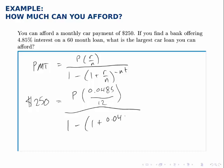We fill in the rest of the formula the same way. T is 5 because this is a 60-month loan.